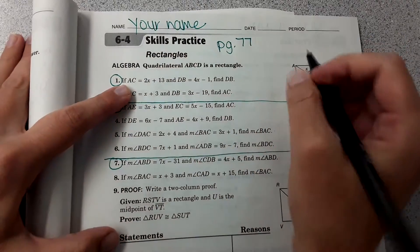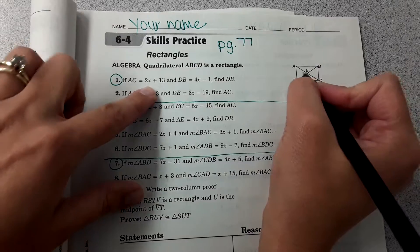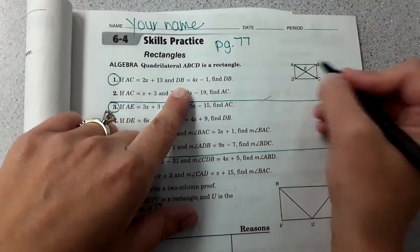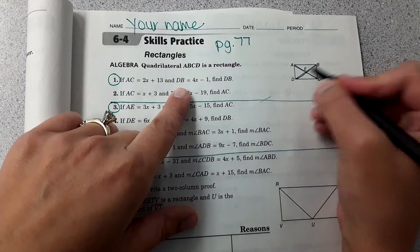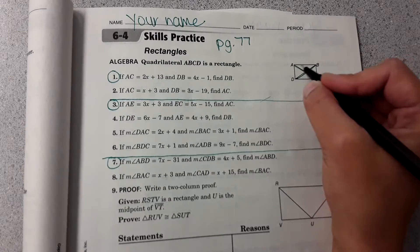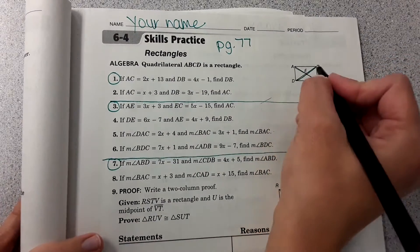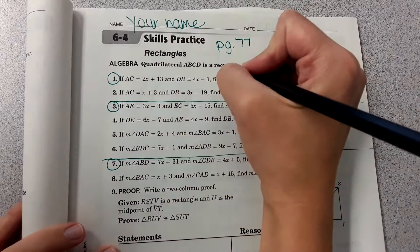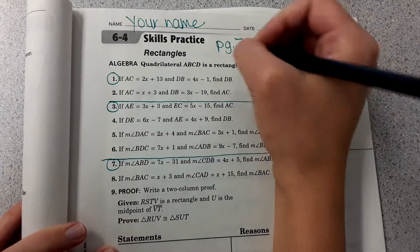Number one, it says if segment AC is 2x plus 13, so that's this segment here, and segment DB is 4x minus 1, so this segment right here, find the length of DB. Well we learned in the notes that the diagonals of a rectangle are actually congruent, so those lengths are the same, so we can set the expressions equal to each other.